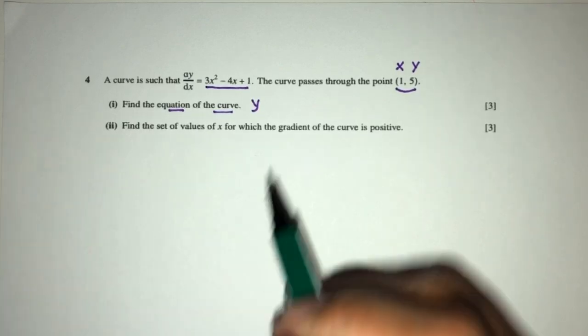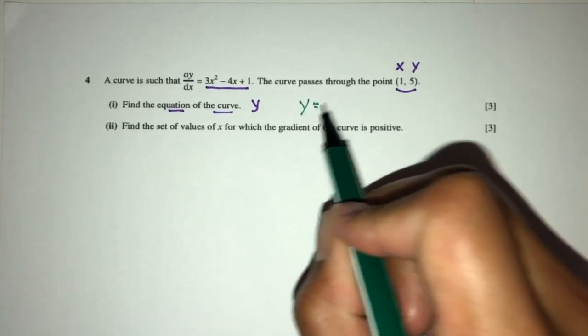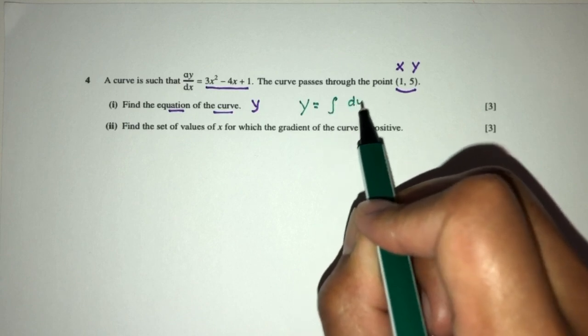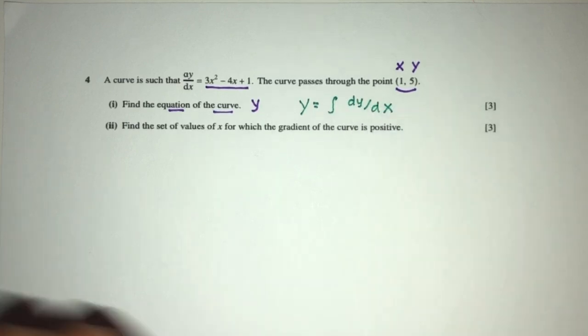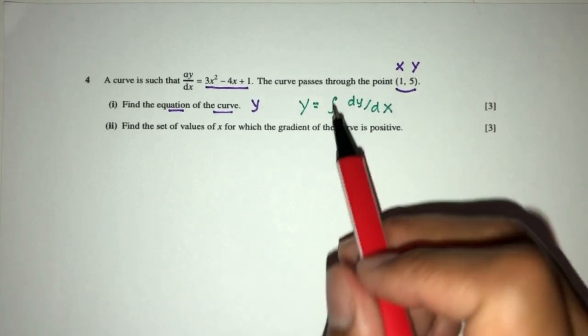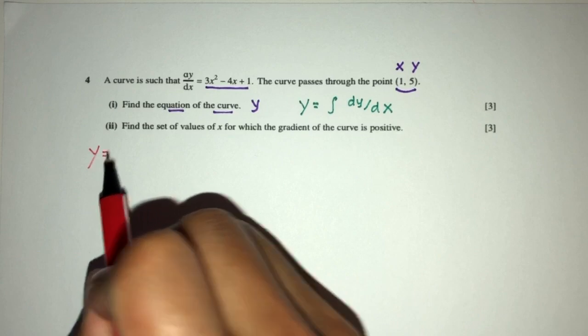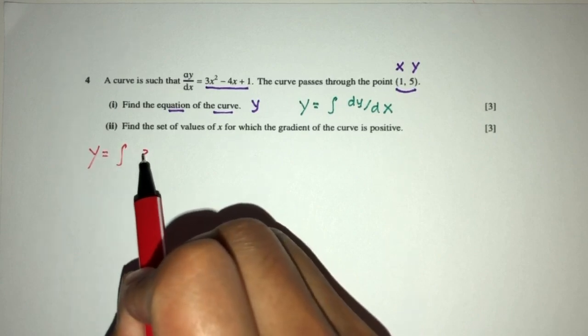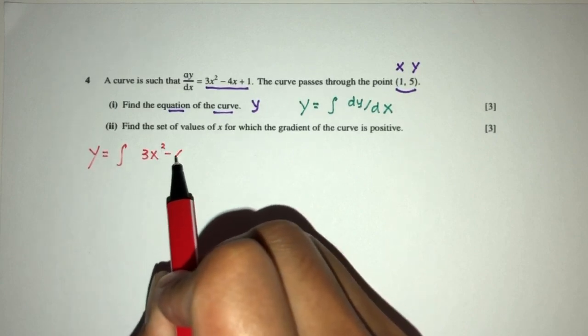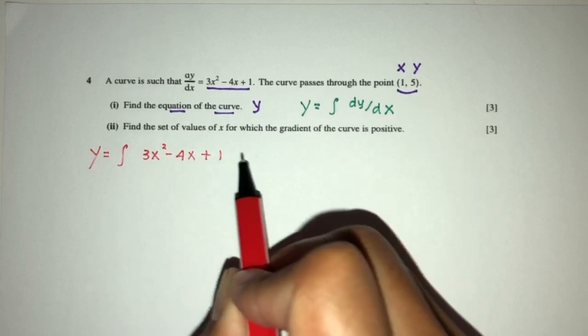To find y, we have to integrate dy by dx, because integration is a reverse process of differentiation. So that's what we have to do. So y will be integration of dy by dx, which is this, plus 1 by dx.